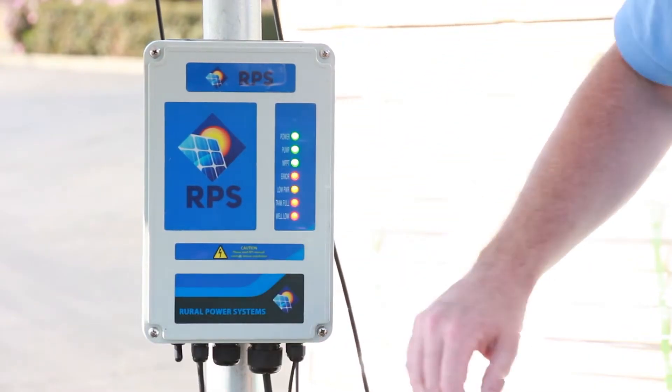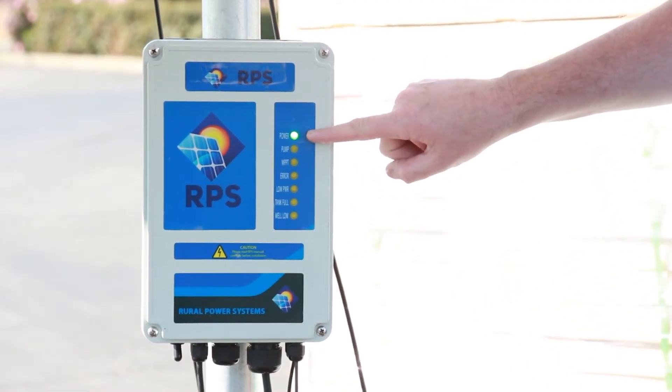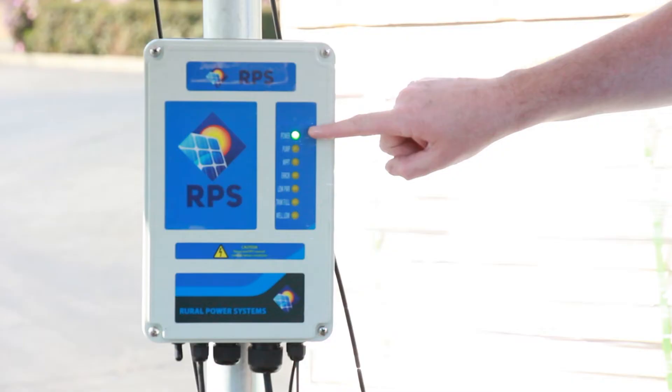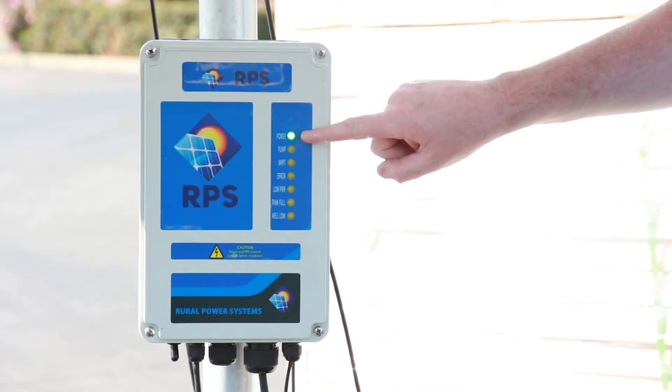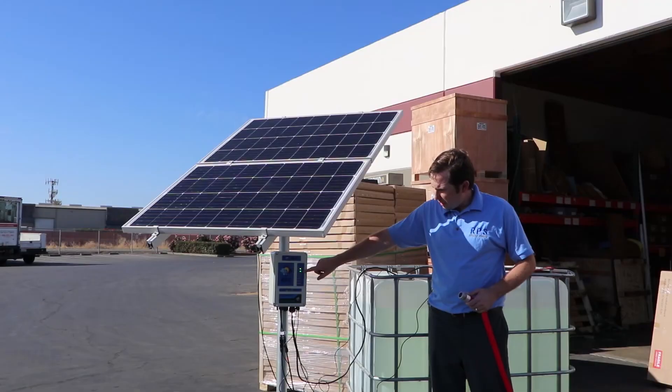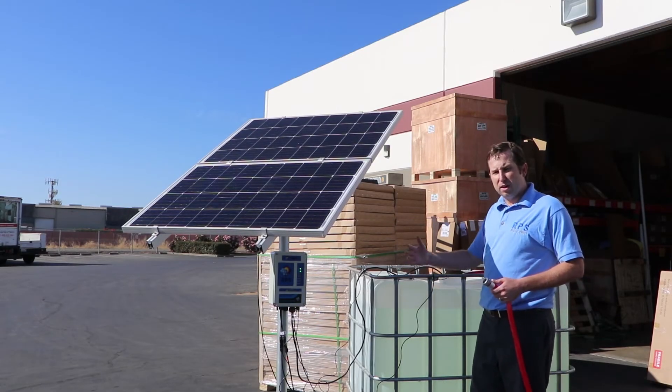With everything hooked up, we'll simply flip the bottom switch on the controller. All the lights will flash, our pump light will come on in just a second. Okay, so we can hear the pump starting to operate. What it has is a soft start, and so over six seconds it's going to come up to speed and start pumping all the water.